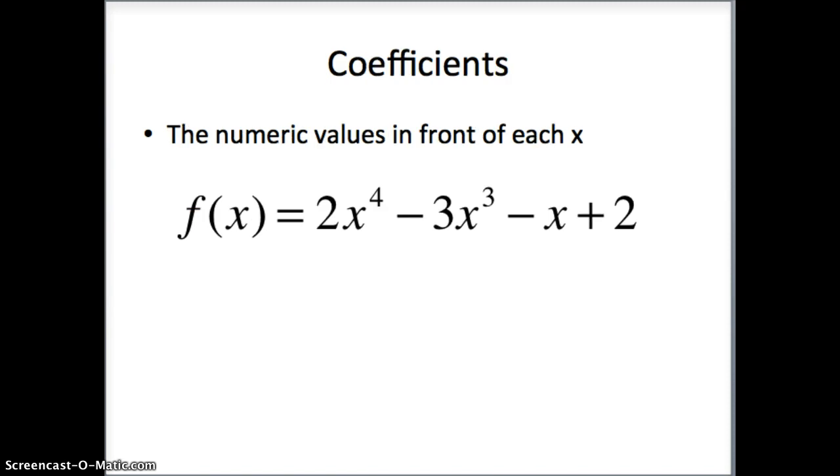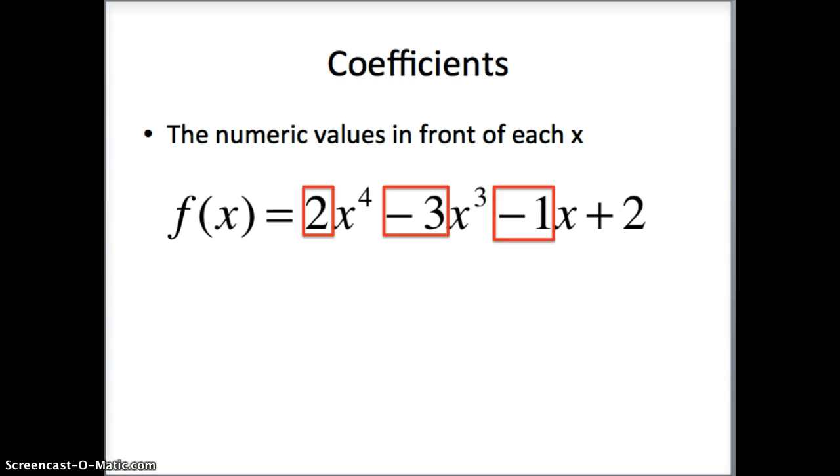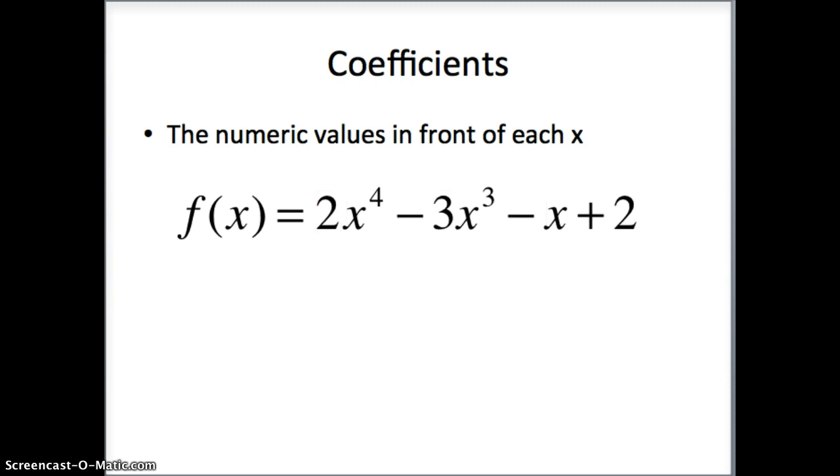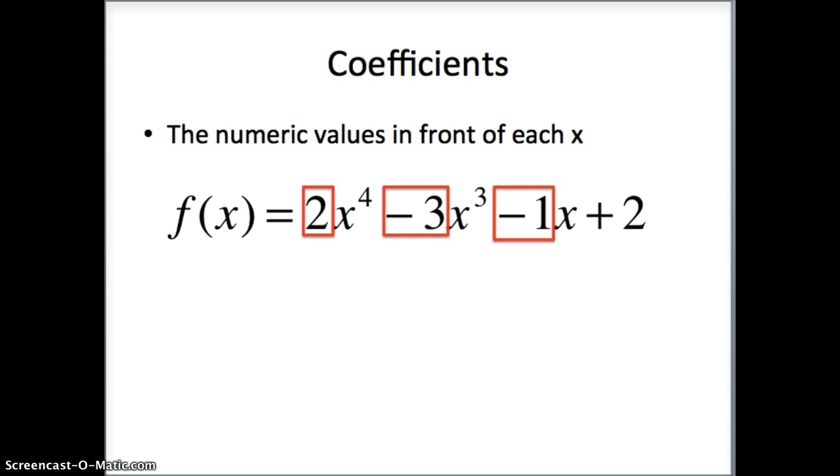Coefficients. When we use the word coefficients, we're simply talking about the numeric values that are in front of each x. So in this case, we have the 2, the negative 3, the negative 1, and the 2 isn't in front of anything, so it's not really a coefficient, per se. But we want to know how many x to the 4th do we have, how many x cubes do we have, so on and so forth. And notice what I did there. This didn't have anything in front of the x. It's a negative value, so we say you have negative 1x. It's assumed it's a 1 if it's not written.